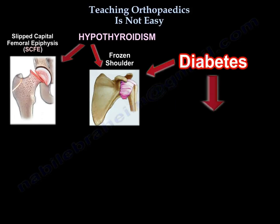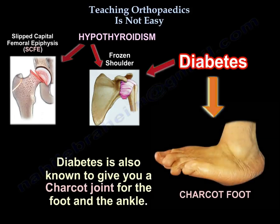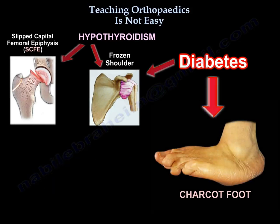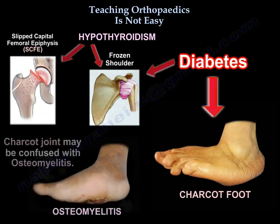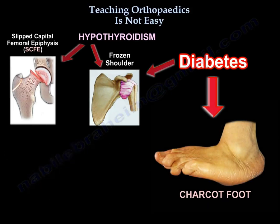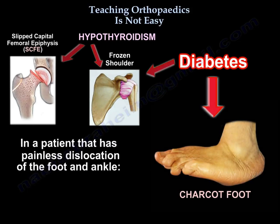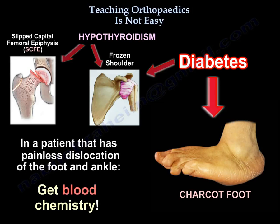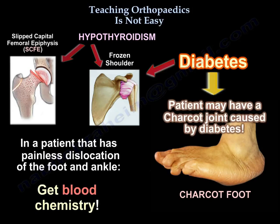Diabetes is also known to cause Charcot joint of the foot and the ankle. Charcot joint may be confused with osteomyelitis. In a patient that has painless dislocation of the foot and the ankle, get blood chemistry — the patient may have a Charcot joint caused by diabetes.